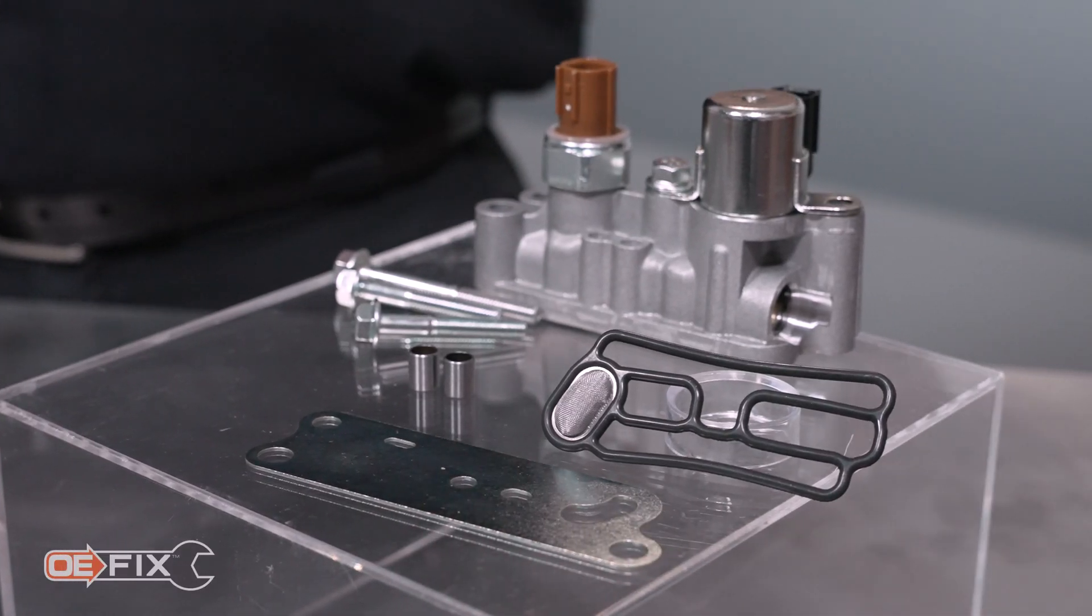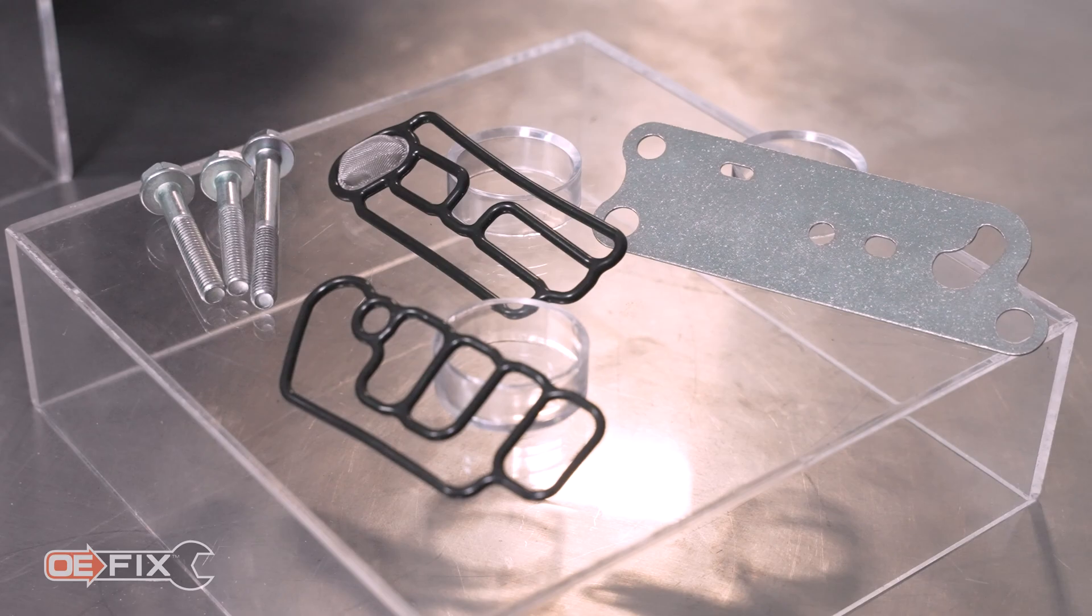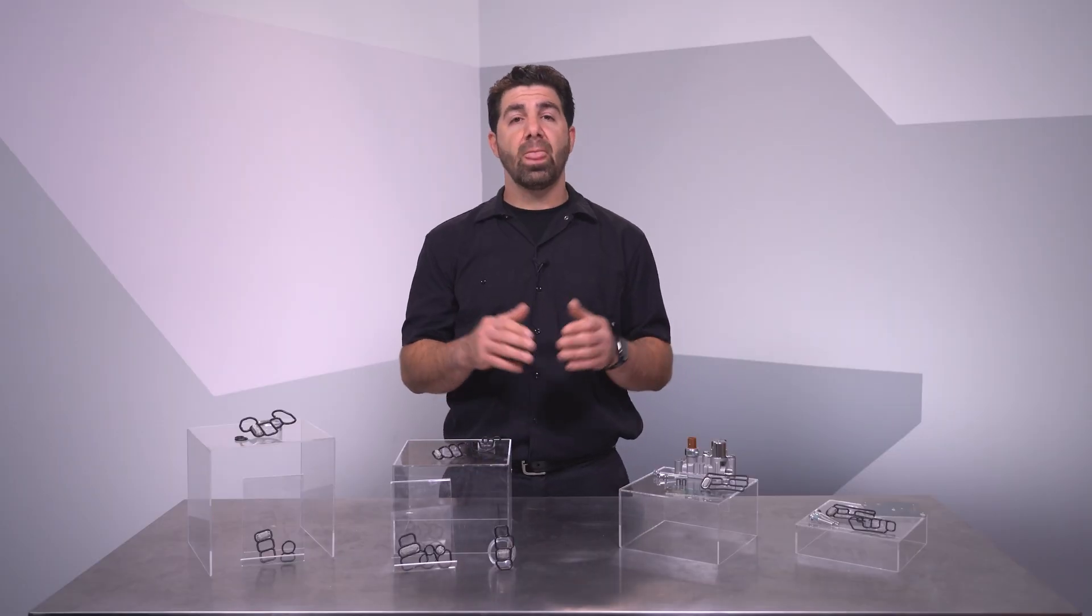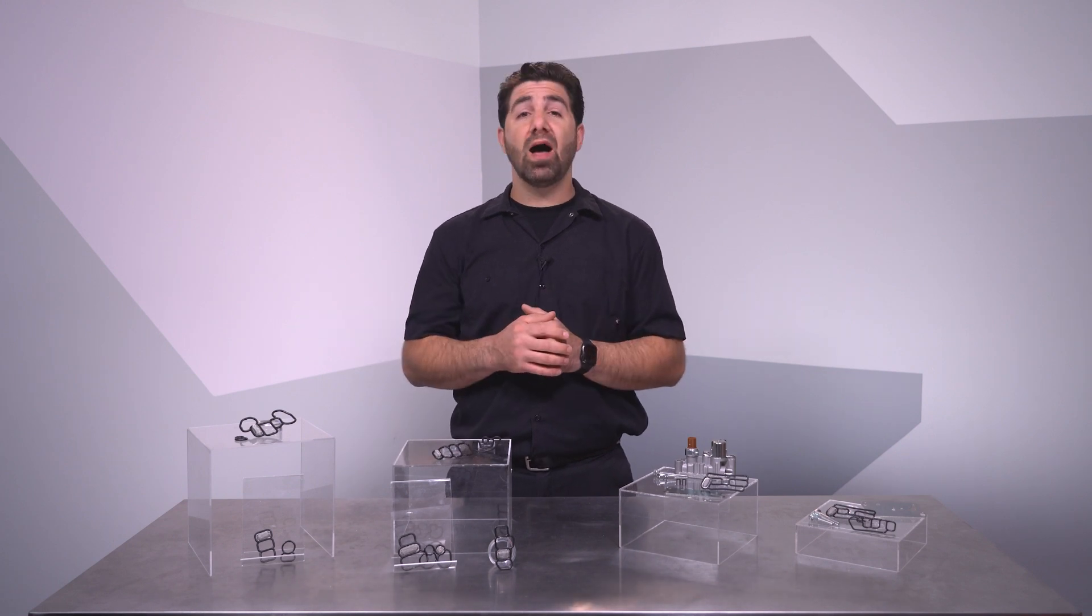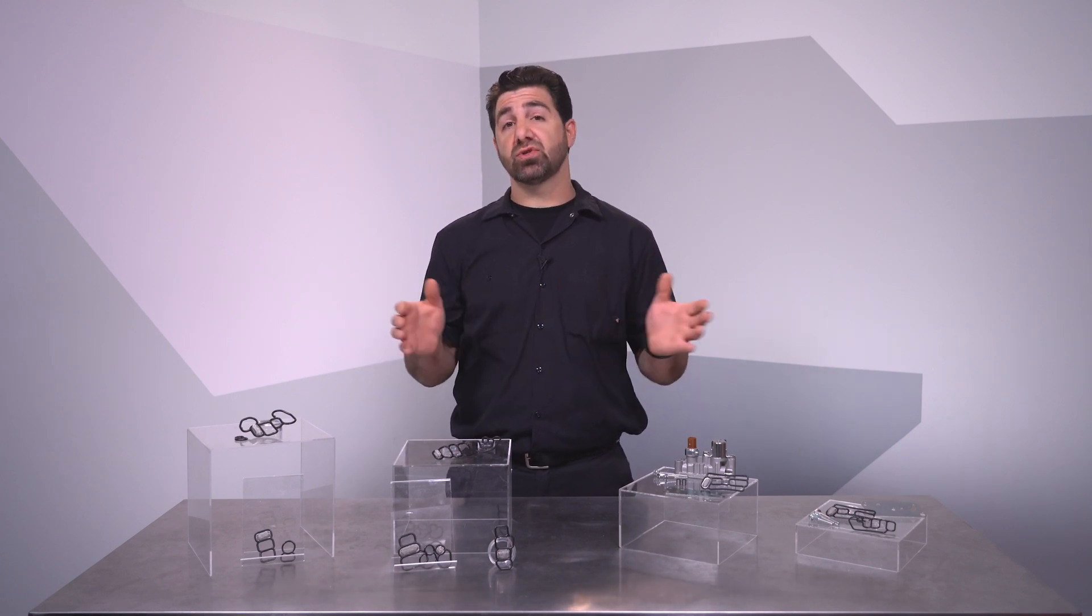The 918056 and the 918056GS are neat little OE fixes. On some vehicles with a 3.5 liter V6 like the Pilot, Odyssey, and Accord, Honda won't sell you just the gaskets and screens.